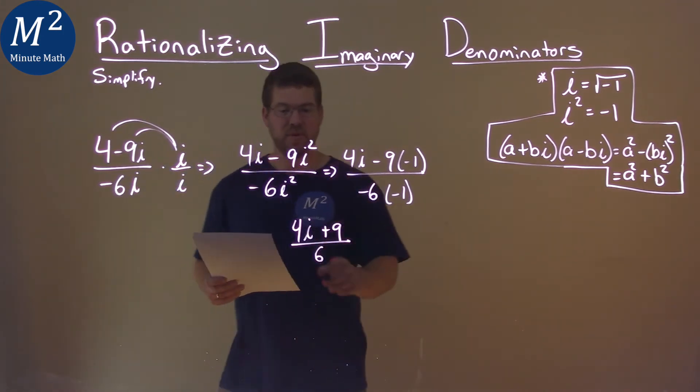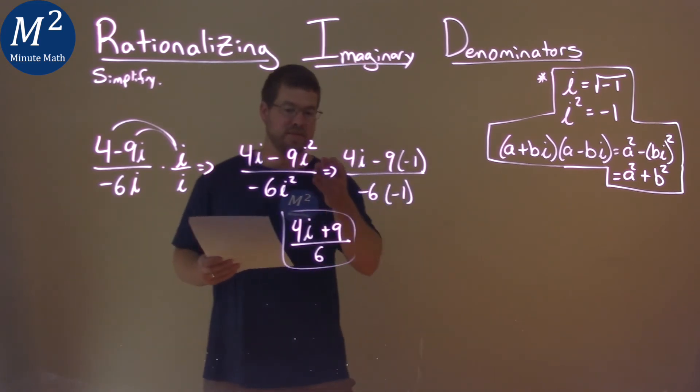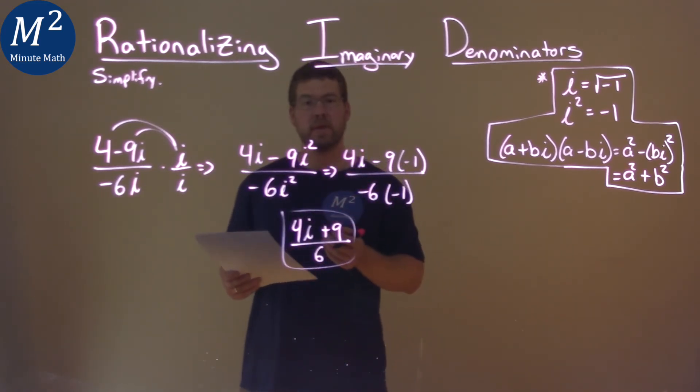And that's actually it. We have our final answer here. It's 4i plus 9 over 6.